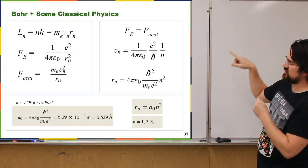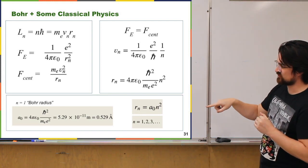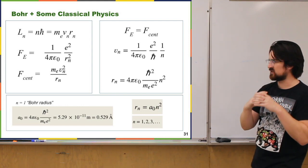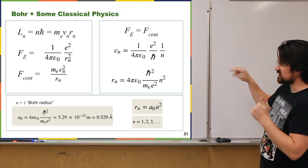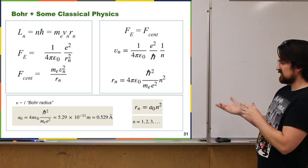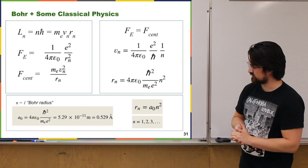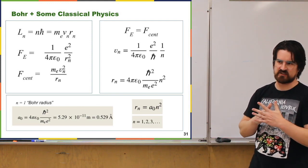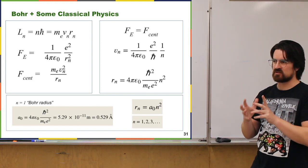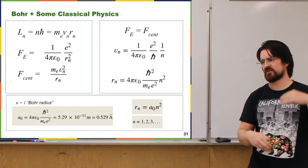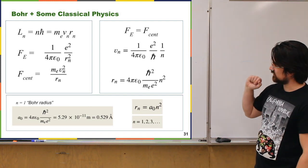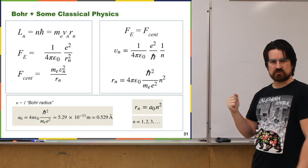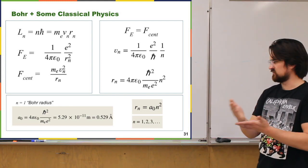We put all those constants together into what's known as the Bohr radius. When n equals 1, that's the radius of the ground state of hydrogen — the lowest energy, lowest angular momentum state. The Bohr radius, a₀, equals 5.29 × 10⁻¹¹ meters, or 0.529 angstroms. An angstrom is 0.1 nanometers — when talking about atoms, an angstrom is a convenient unit. The quantized radius then looks very clean: it's just a₀ multiplied by n squared, where n can be any positive integer.